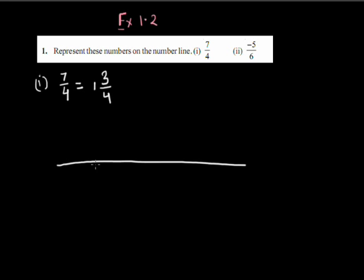What I can do is divide — this is 0, this is 1 — I can divide the region between 1 and 2 into 4 equal parts by making 3 lines or 3 points between 1 and 2. So I have divided the region between 1 and 2 into 4 equal parts by making 3 points.